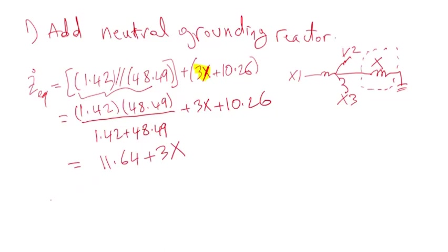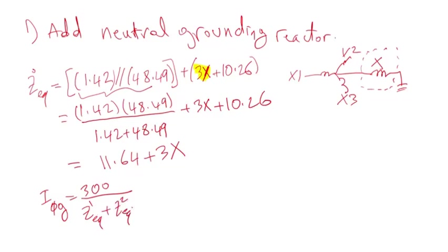We know the phase-to-ground fault on phase A is equal to 3 times 100, which is 300, divided by the sum of the equivalent positive sequence impedance, negative sequence impedance, and zero sequence impedance. So it's 300 divided by the total impedance sum.